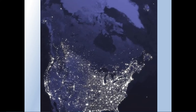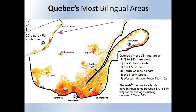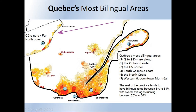Looking closer at Quebec, you see population density around Montreal and Quebec City, but also the bilingual areas of Quebec. Quebec's most bilingual areas are along the Ontario border, the U.S. border, south Gaspé Bay, the north coast, and western downtown Montreal. The rest of the province has bilingual rates between 5 and 51 percent, with overall averages running between 20 and 30 percent, mostly near English-speaking neighbors Ontario and the United States.